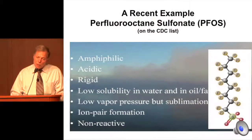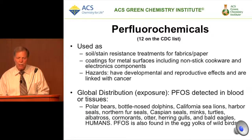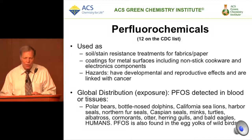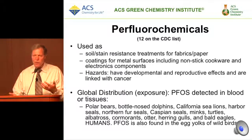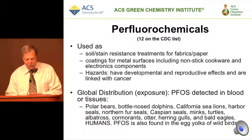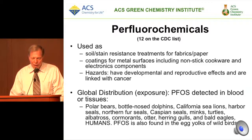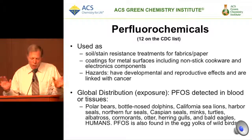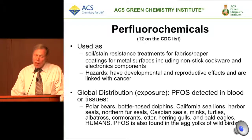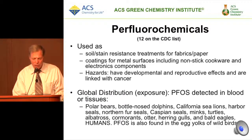Another example is PFAS. It's used in soil-stain-resistant treatments, coatings, metal surfaces — we all have non-stick metal pans, and they're great, but they also have PFAS, or perfluorochemicals, in them. PFAS has been detected in the blood and tissues of a wide range of animals across a wide range of locations.